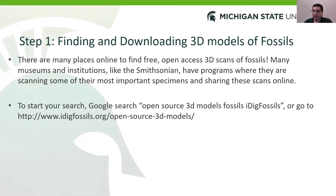Step one is finding and downloading a 3D model of a fossil you want to print. There are lots of places online where you can find free open-access 3D scans of fossils — open access meaning anyone can access them. A lot of public institutions like the Smithsonian are undergoing efforts to scan their collections so they can be shared with the public and used by researchers. Google search 'open source 3D models fossils iDig fossils,' or go to www.idigfossils.org/open-source-3D-models.